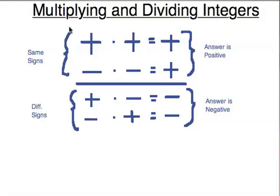In this video, we're going to talk about the rules for multiplying and dividing integers, which are actually a little bit simpler than the rules for adding and subtracting integers. If the signs are the same, the answer is simply positive. And if the signs are different, the answer is negative. I highly recommend that you jot this down — you may want to pause this video and write it all down. And then we'll do some examples.